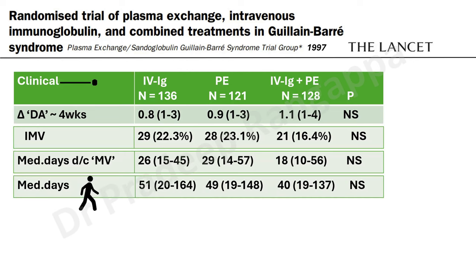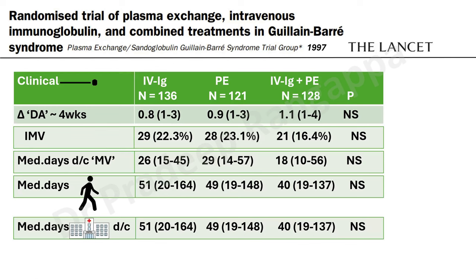The median days for mobilization is important. In Guillain-Barre syndrome, the median days for the patient to get back to walking status is close to two months — around 40 to 50 days — with no difference between any of the three modalities. This highlights the morbidity burden of GBS. Median days to hospital discharge also showed no difference between the three. So whether you use IVIG, plasma exchange, or combination, it did not make a difference.